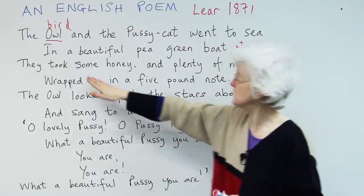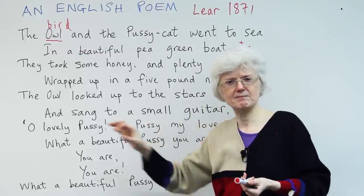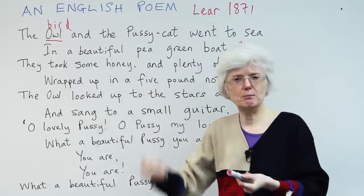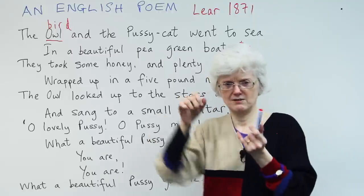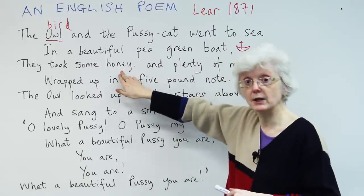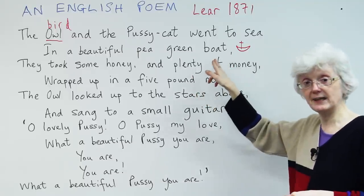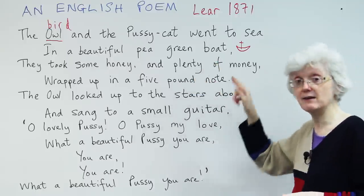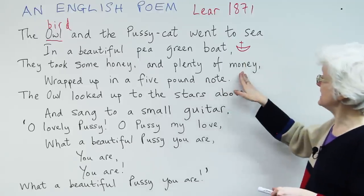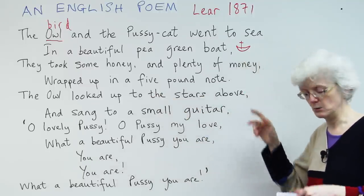What did they take with them? They took some honey — do you know honey? The sweet stuff that bees collect from flowers and make in a pot. Very sweet — you put it on bread and eat it, or in a pudding. They took some honey and plenty of money. Well, that was sensible. They're not very sensible going onto the sea in a boat, but at least they've been sensible enough to take some money with them. Plenty of money.